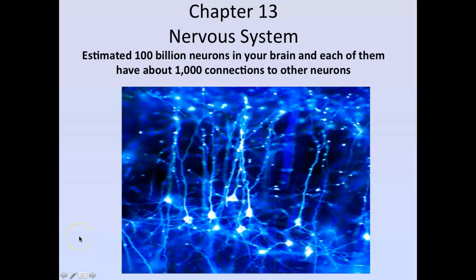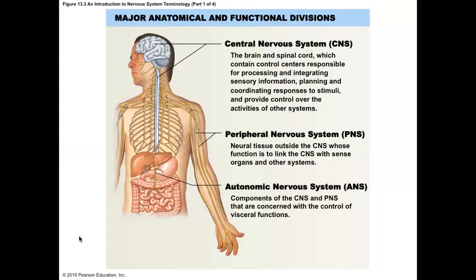Let's get started with how we divide the nervous system up. Very simply, there is a central nervous system and a peripheral nervous system. The central nervous system is just what is shown in gray in this picture — it's just the brain and just the spinal cord, nothing else. The central nervous system is brain and spinal cord.